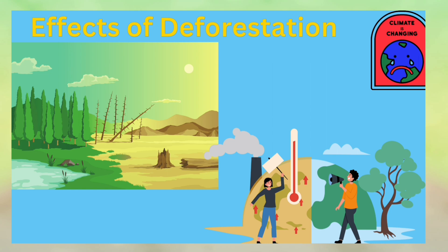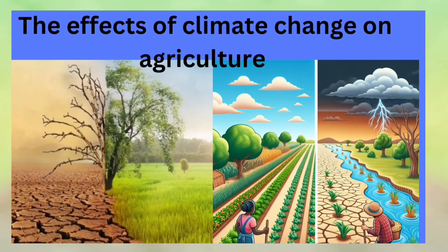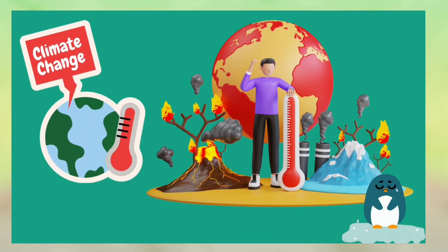Now we discuss about the effect of climate change on agriculture. Climate change can make conditions better or worse for growing crops in different regions. Due to climate change, the temperature of the Earth is gradually increasing, glaciers are melting, and there are more severe storms.